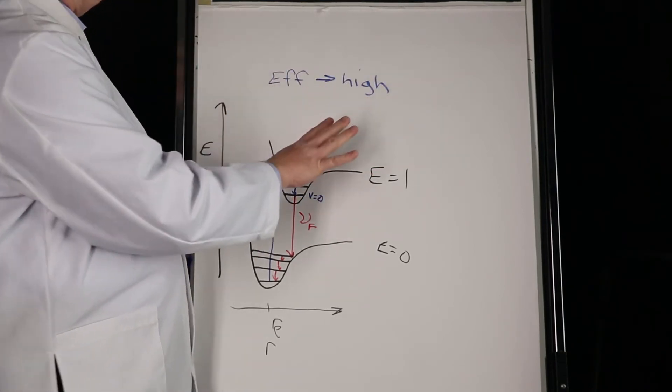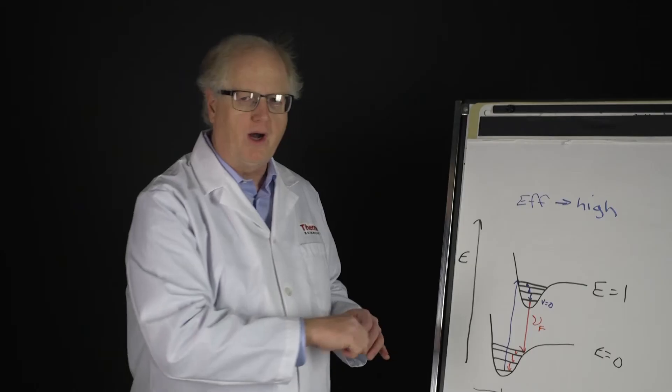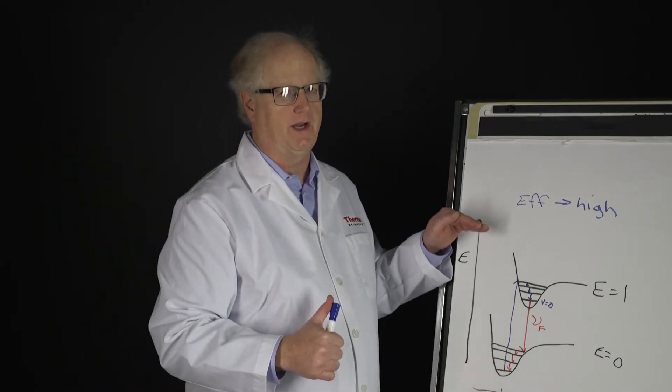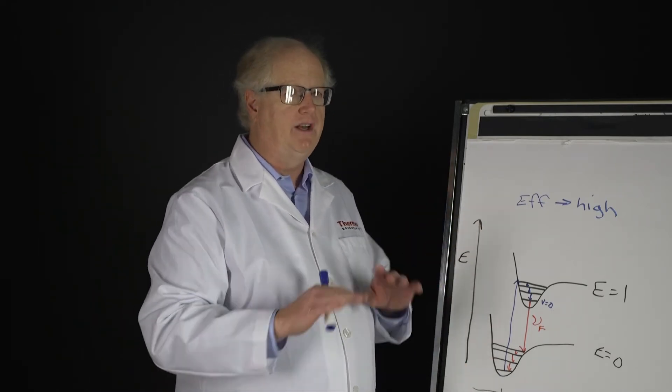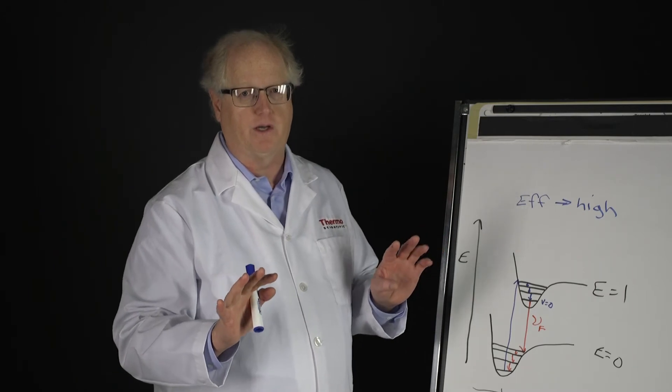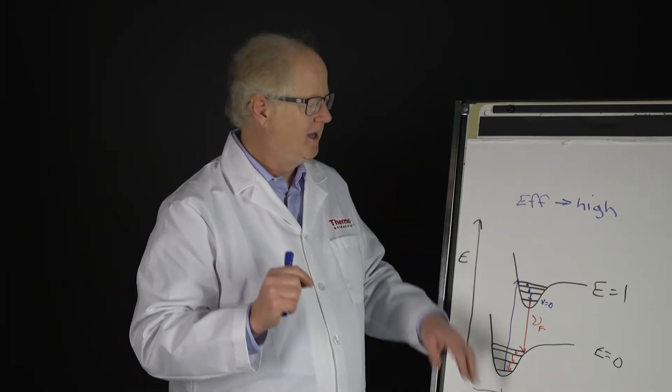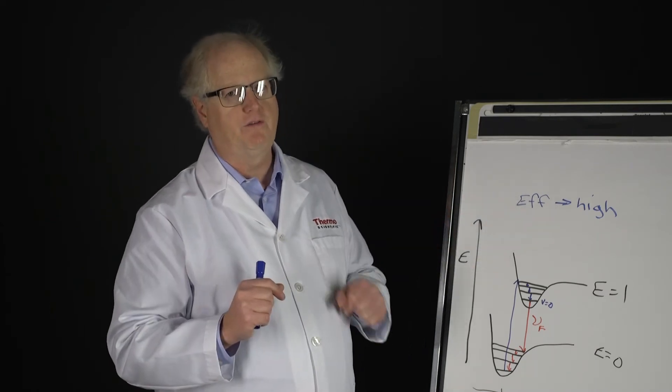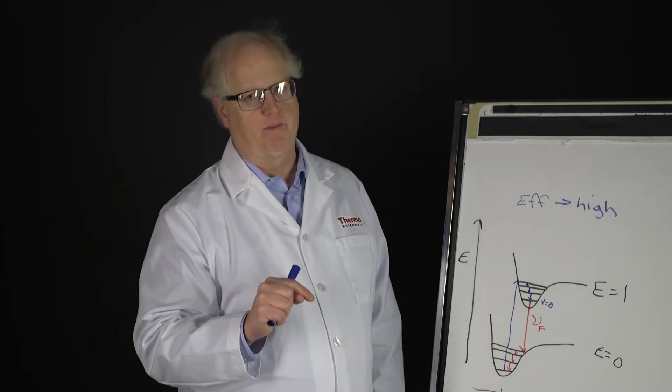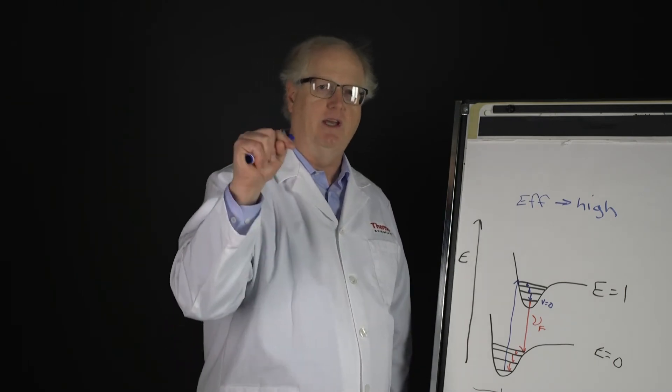When we were looking at the Raman, remember it went to a virtual state. That is one out of ten to the fourth, ten to the eighth photons, so you need a lot of photons. It's very inefficient. Fluorescence is very efficient. That's the problem. If a molecule can fluoresce, it will.